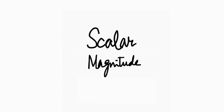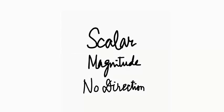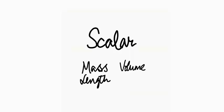Scalar quantities are those which have got a magnitude but no direction. For example, mass, length, volume, resistance — for all these cases we only need to talk about the magnitudes, and in no way is direction associated with these quantities.